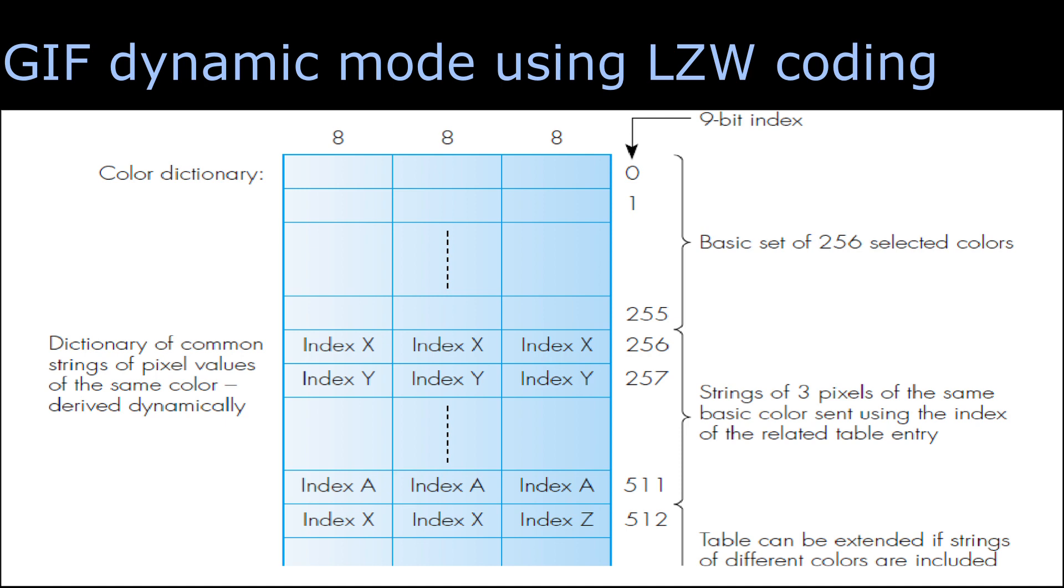Suppose when 3 continuous pixels have the same color, then we have to transmit 24 bits in the basic operational mode. Here when the 3 continuous pixels have the same color, then only a 9-bit index is transmitted. In this way, the dictionary can be extended up to 511. In order to represent the colors from 0 to 511, we need a 9-bit index.